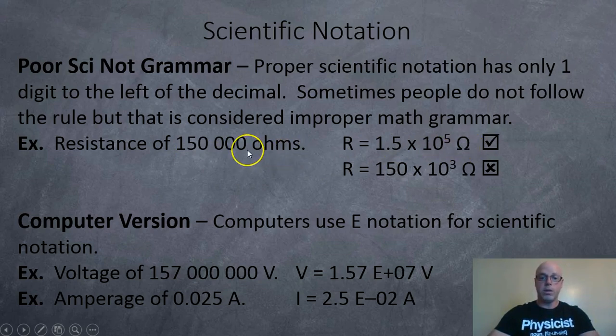But sometimes it's more convenient just to have everything in terms of thousands of ohms. So in that case, sometimes people will write it like this. 150 times 10 to the 3, which is the same value. Just, it's not really grammatically correct.